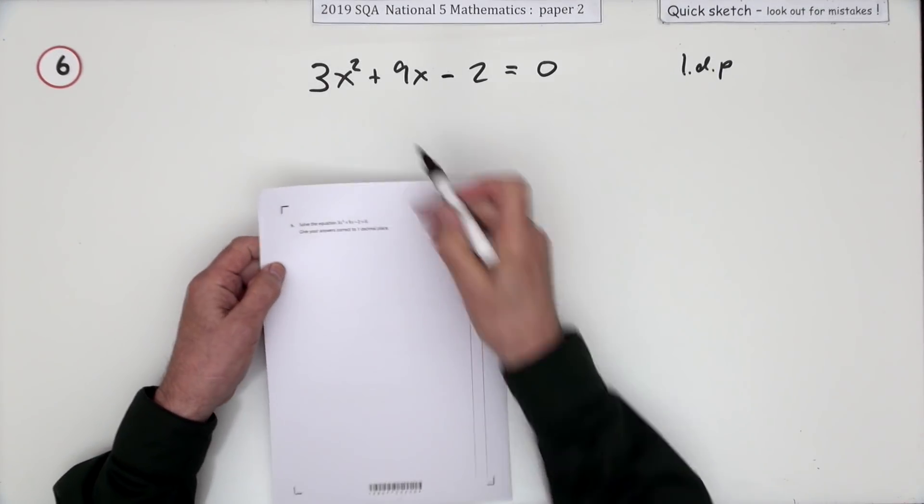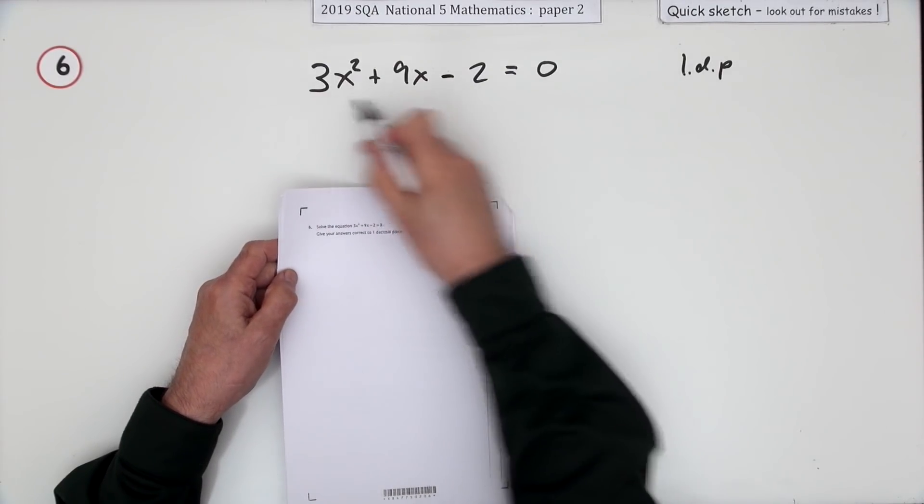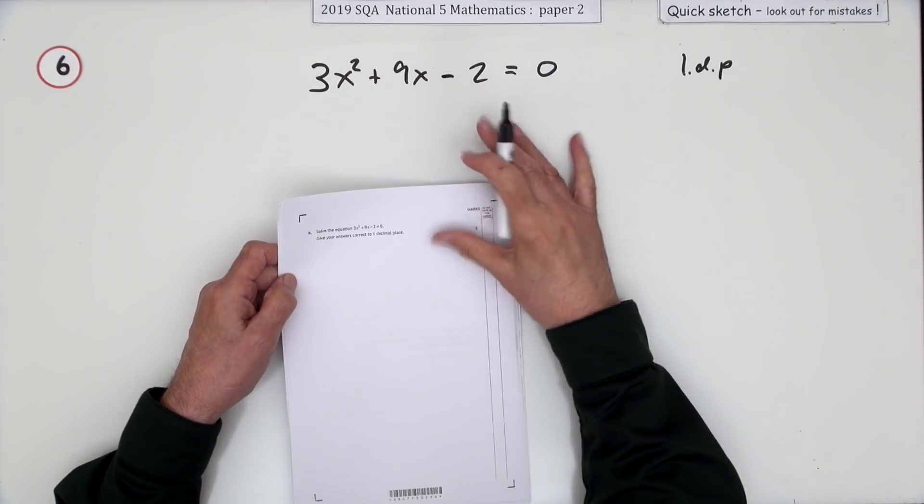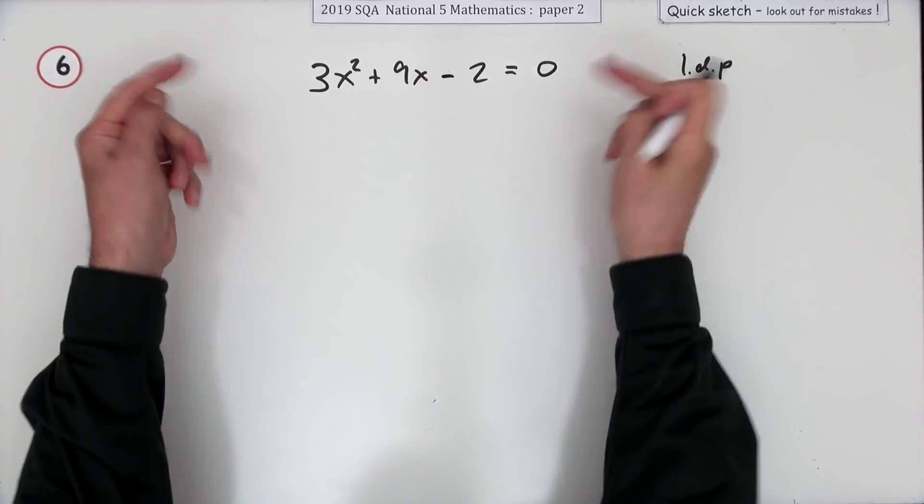Number six: solve this quadratic equation. As soon as it says to one decimal place, you know it's not going to factorize. You'll be using the formula, so it's just a case of copy the formula from the front, put in the figures, and press the buttons.